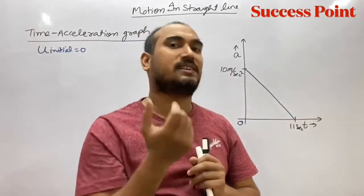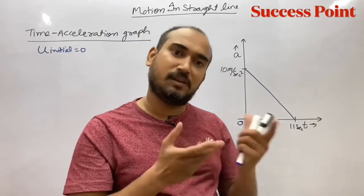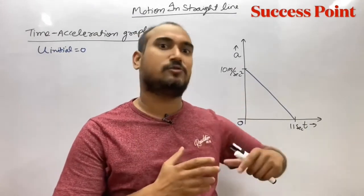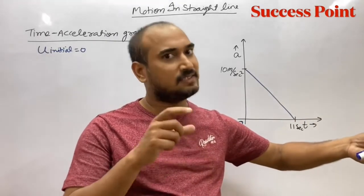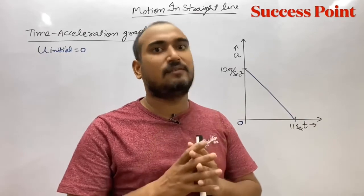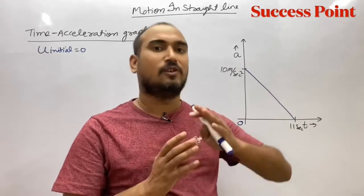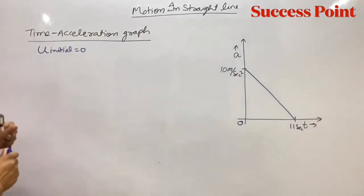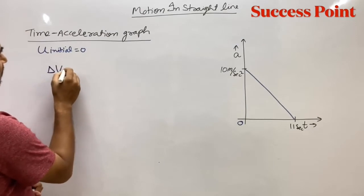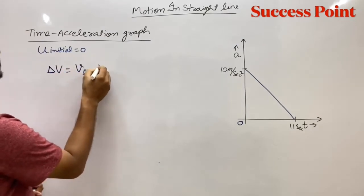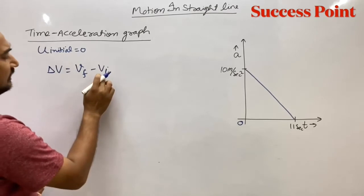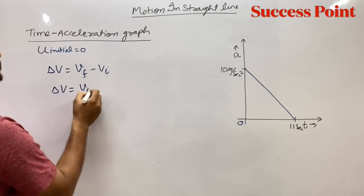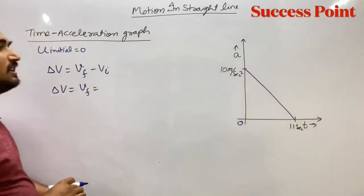If it had some velocity initially, we would add the change. But when there's no initial velocity, the change in velocity becomes the final velocity of that body. Because we write: change in velocity equals final velocity minus initial velocity. Now the initial velocity is zero, so change in velocity is the final velocity, and this will be the maximum velocity for this case.